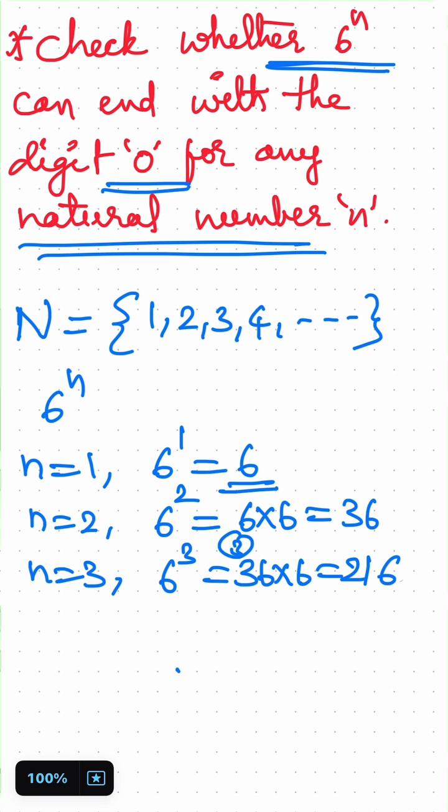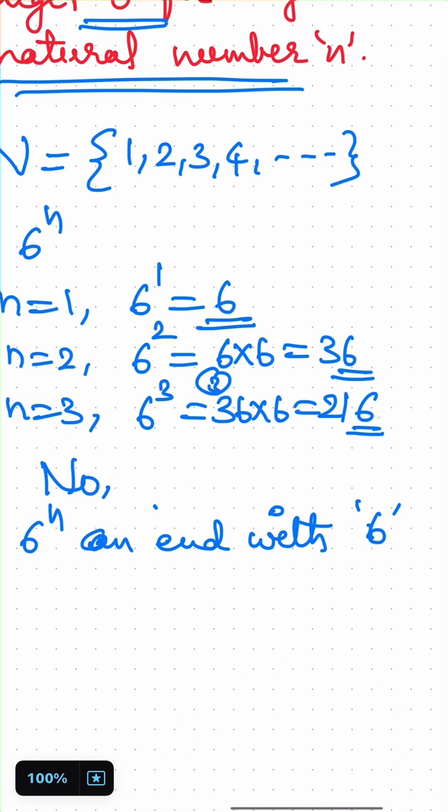Observe here, the unit's place for each and every expression has 6 only. So, can it end with digit 0? No. 6 to the power of n cannot end with 0, it can end with 6 for any natural number n.